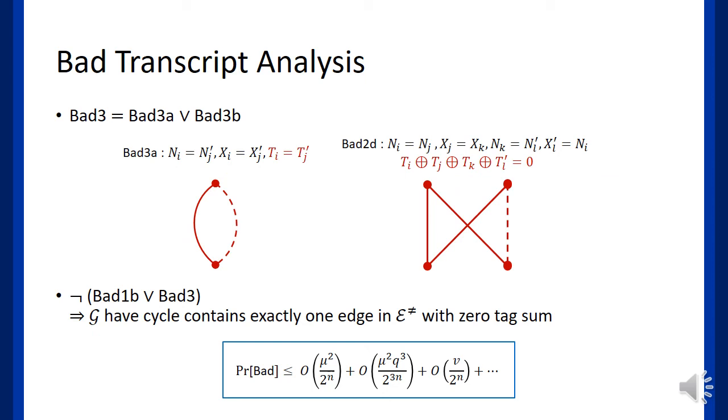Finally, Bad3 holds if either Bad3a or Bad3b holds. Each represents a different case to have a cycle in G with exactly one dashed edge whose tag sum is 0. To sum up, without having Bad1, Bad2, and Bad3, the graph does not have contradiction, and the probability to get a bad transcript is very small as you can see in the inequality.